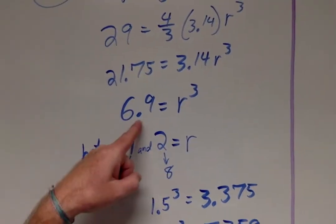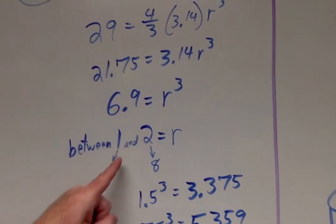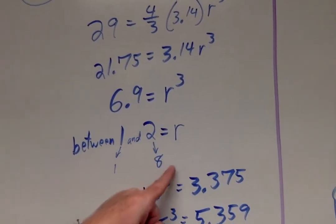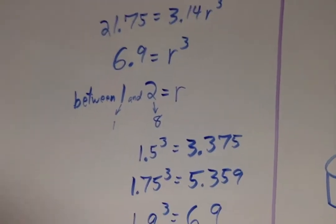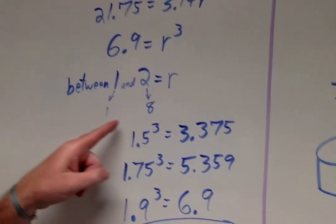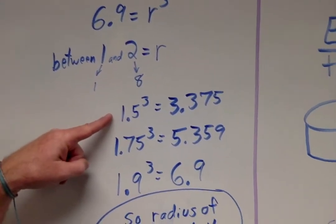Then I divided both sides by a 3.14! How am I going to find the cube root of 6.9? Well, 1 cubed is 1, 2 cubed is 8, so it's got to be in between a 1 and an 8! Right? Well, so, then I tried my next best thing! I tried a 1.5!